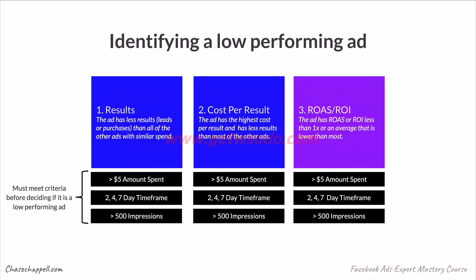Next, make sure each ad has 500 or more impressions. That's the gold standard for how many impressions an ad needs before Facebook can determine whether it's a performing or low performing ad. We need at least 500 impressions to identify, out of all the people who've seen this ad, how many have interacted with it, what results we've gotten, whether the cost is low, whether result volume is high, and whether the return on ad spend is there. If so, keep it; if not, remove it.